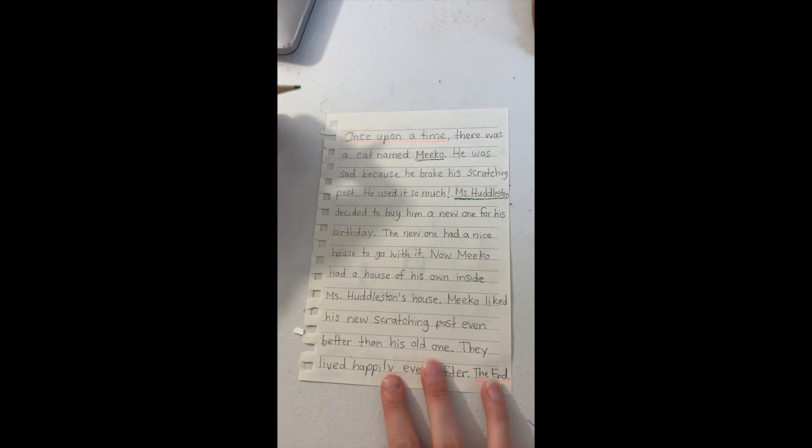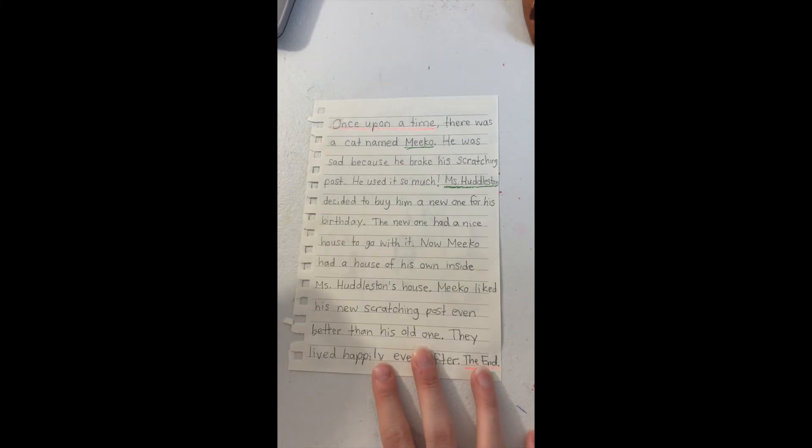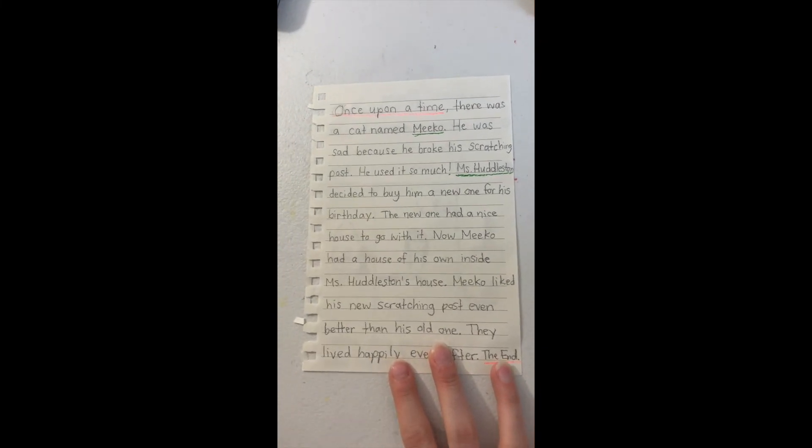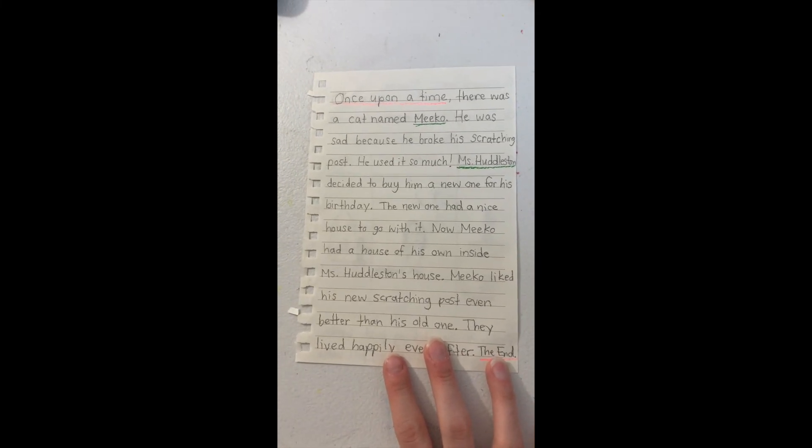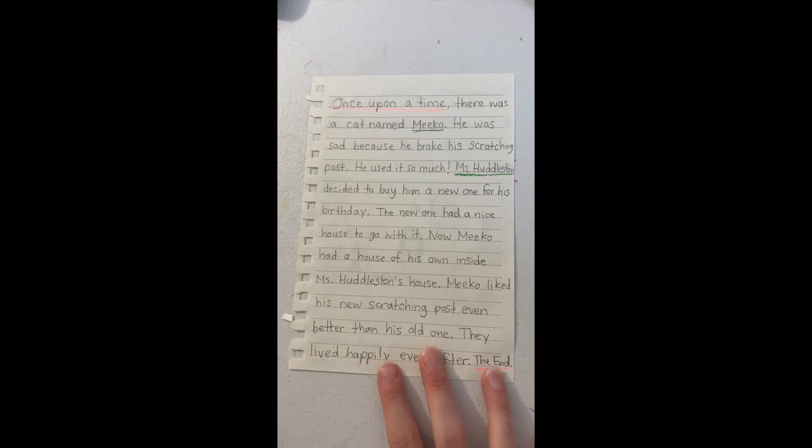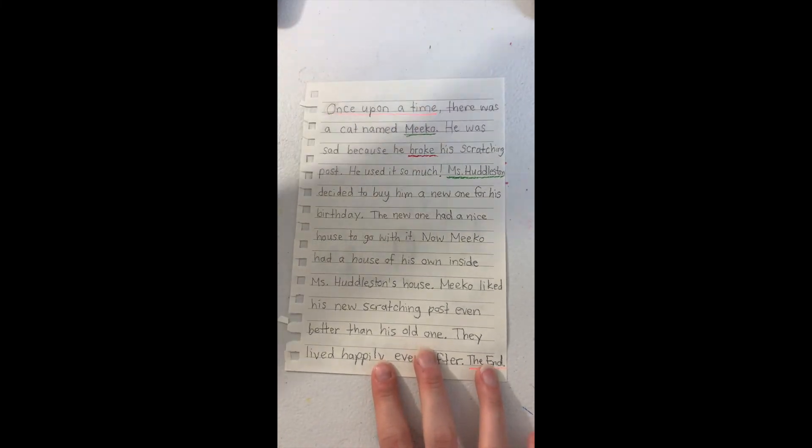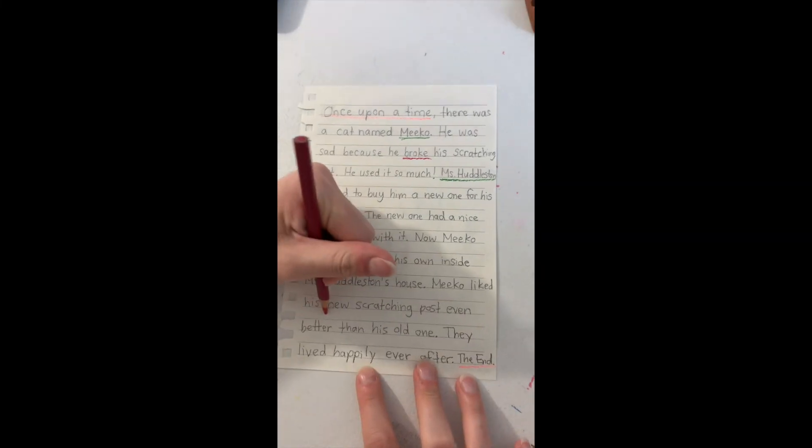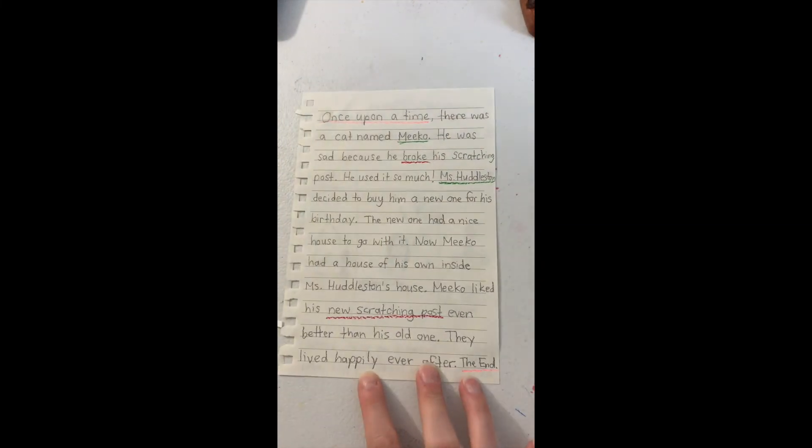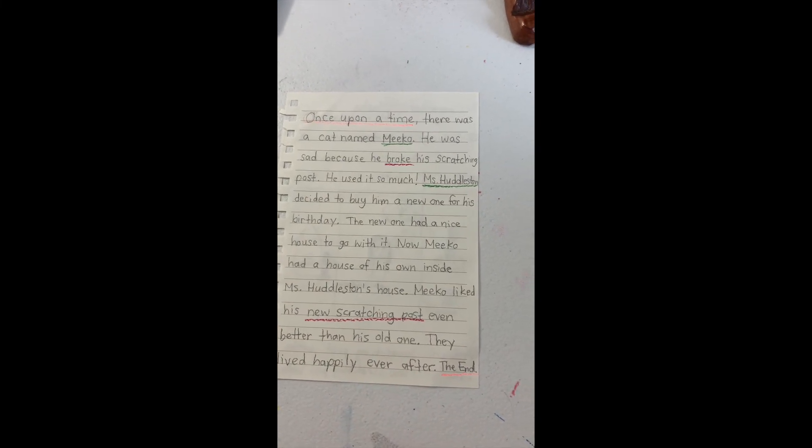I also have the beginning, middle, and end. I also have my problem and solution. Remember, the problem was that Miko was sad because he broke his scratching post. So, I'm going to underline that in red. You can see it here. I'm also going to underline the solution in red because Miss Huddleston bought him a new one, and he liked it even more than his old one. I have all the parts of my story.